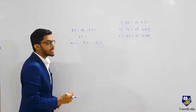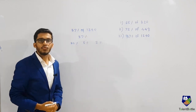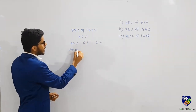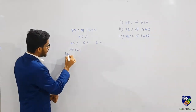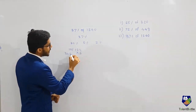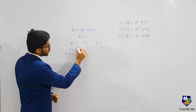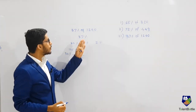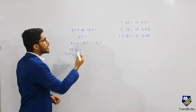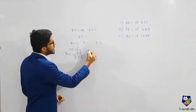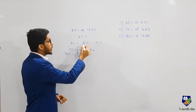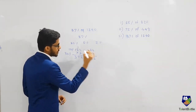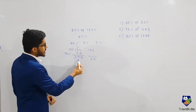First, I find 10 percent of 1240, which is 124. So 30 percent will be 3 times 124: 3 × 124 = 372. Now for 5 percent — we know 10 percent is 124, so 5 percent is half of 124, which is 62. So I have 30 percent as 372 and 5 percent as 62.